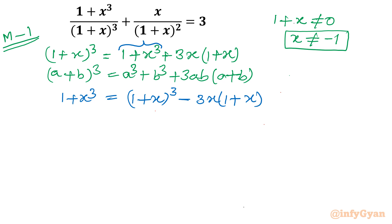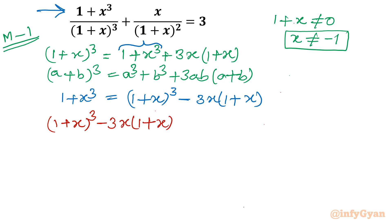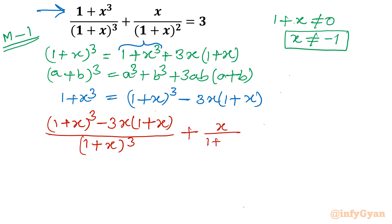I will now put that value into the equation. The cubic term won't appear directly. Substituting, we get [(1 + x)³ − 3x(1 + x)] over (1 + x)³, plus x over (1 + x)², equal to 3.